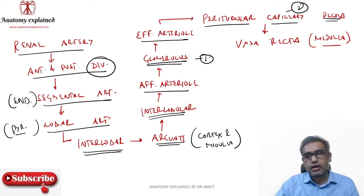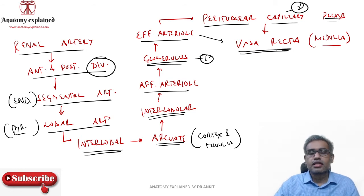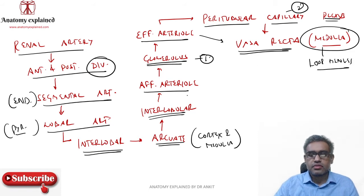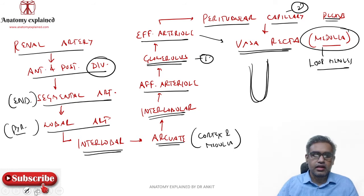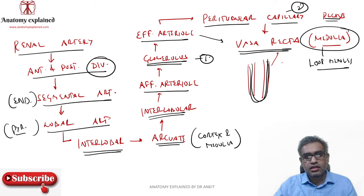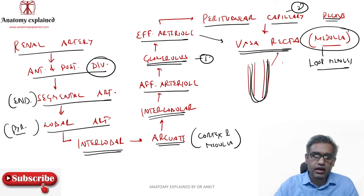Branches of the efferent arteriole also form the vasa recta — 'recta' meaning straight. These vasa recta act around the medulla, which is where the loop of Henle is located. These straight vessels run around the loop of Henle, acting as a countercurrent multiplier exchange system for the loop of Henle.